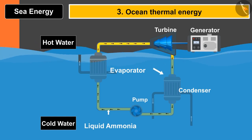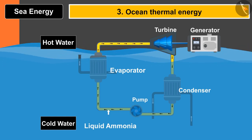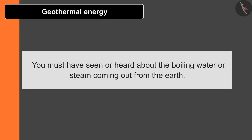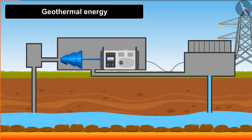The third source is geothermal energy. You must have seen or heard about deep boiling water or steam coming out of the earth. This water comes out because of temperature differences. Hot magma is present in the core of the earth, and due to the motion of tectonic plates it heats up the rocks just above it.